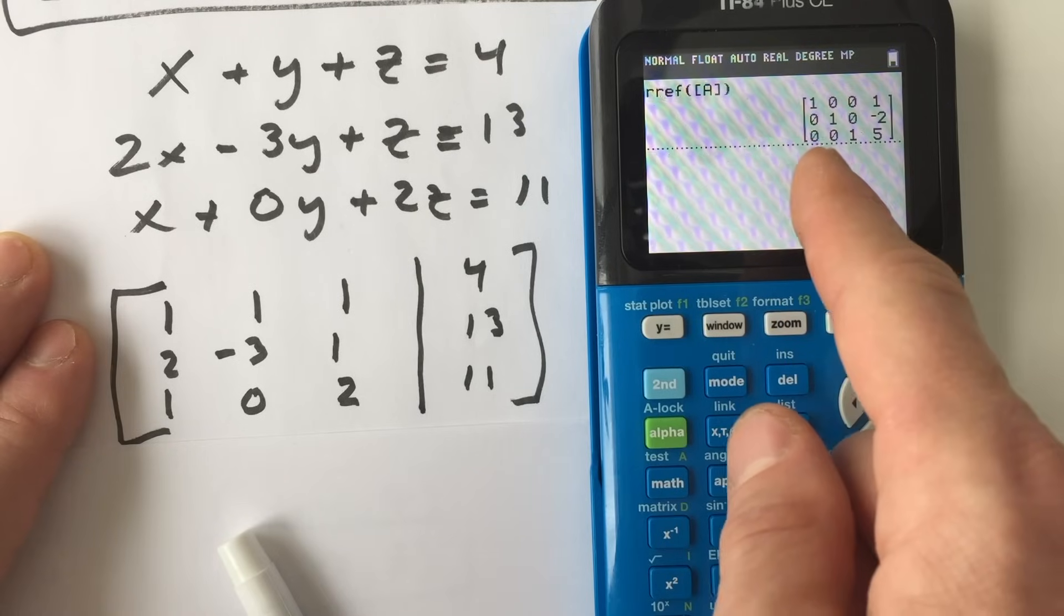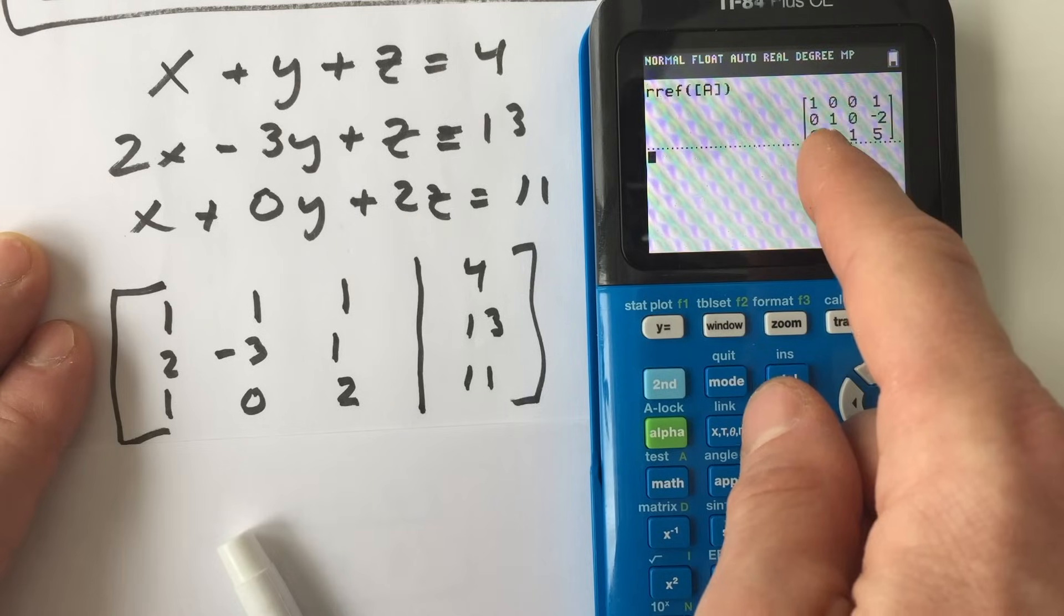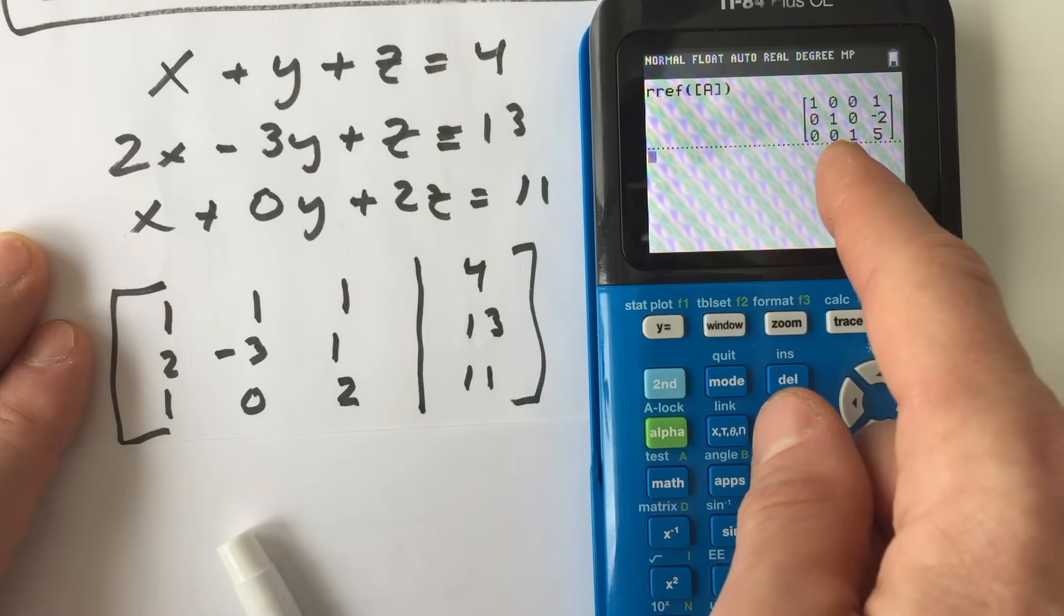And now what you can see is we have the solution to our system of equations. We have 1x equals 1, 1y equals negative 2, and 1z equals 5.